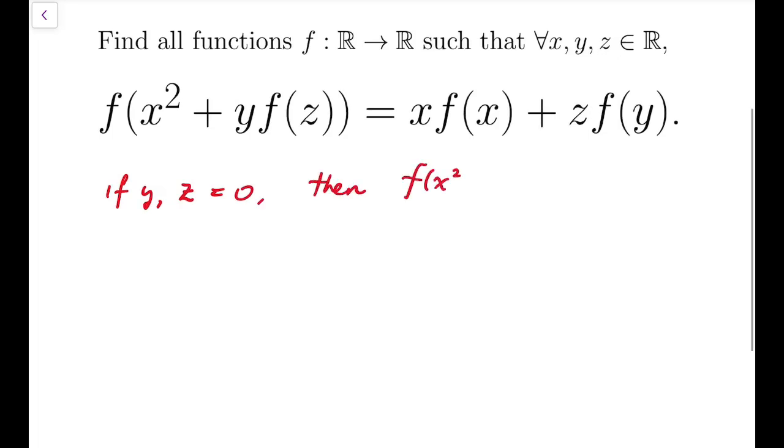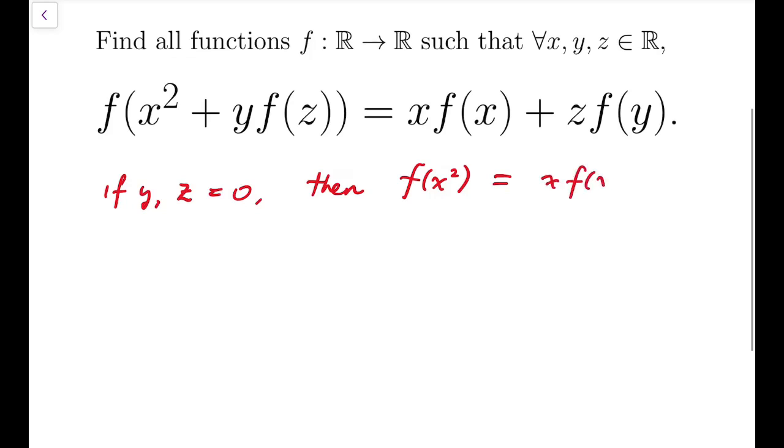Then, left-hand side will become f of x squared, and right-hand side is just x times f of x, because both y, f of z, and z, f of y would vanish. So this is a useful result that we'll use sometime later.